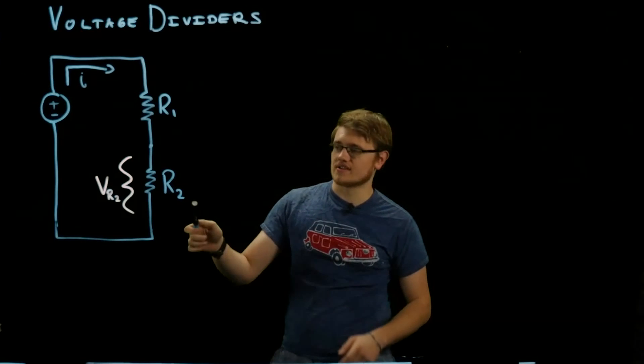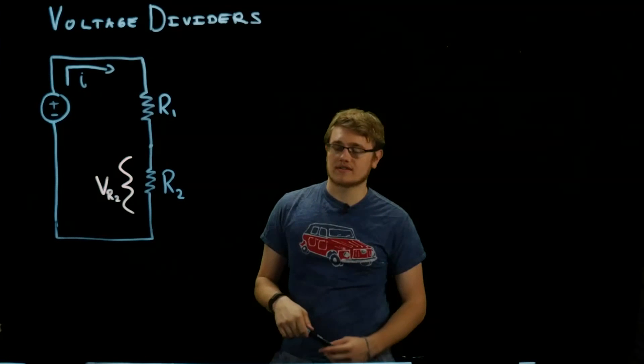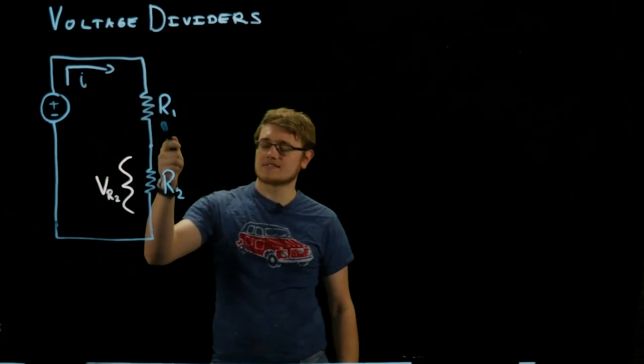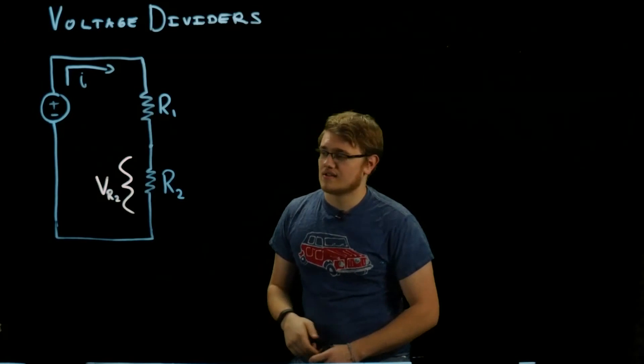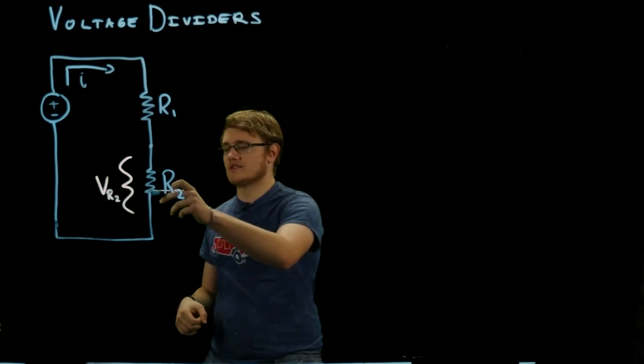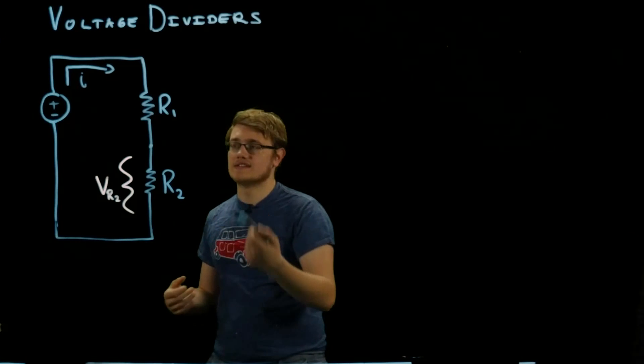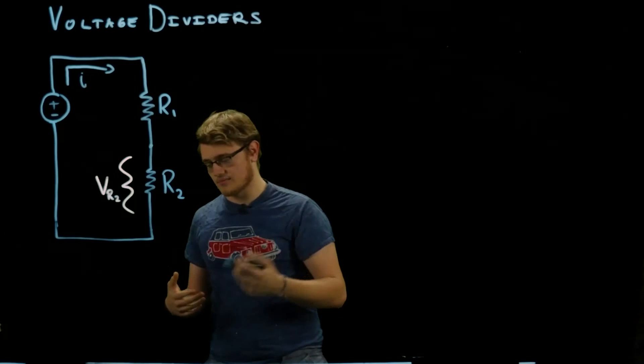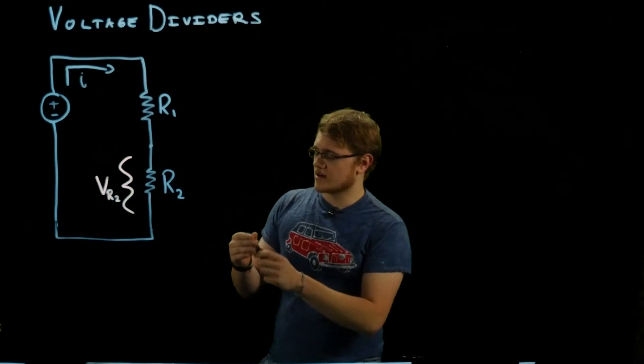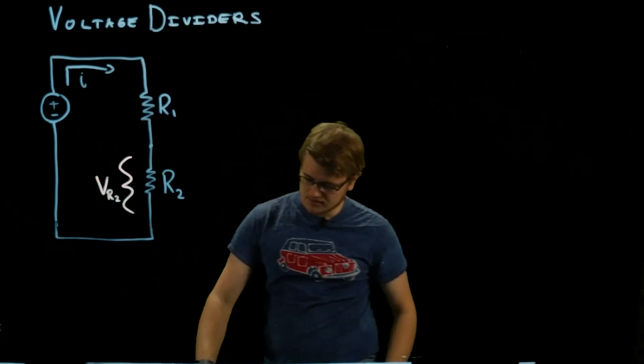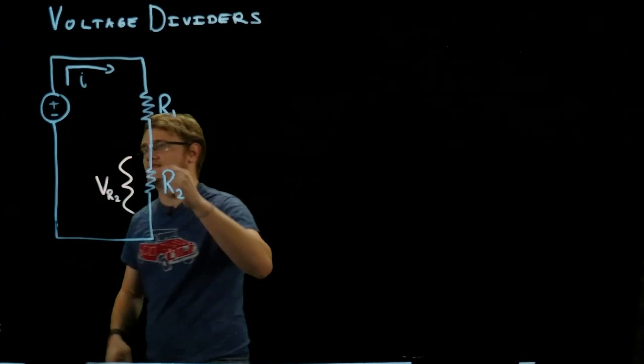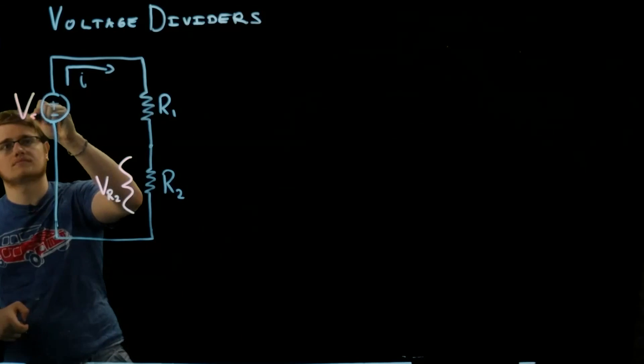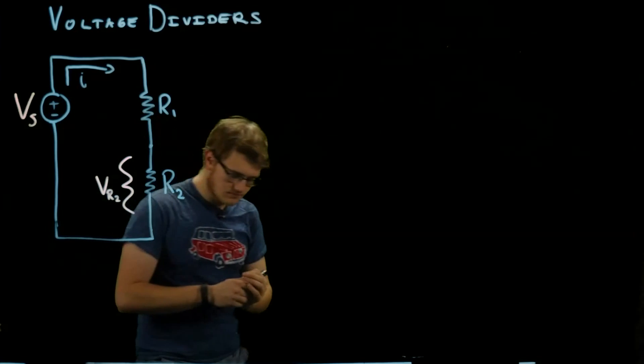Here's a circuit in which you would use a voltage divider. Right here we have two resistors in series. If we wanted to find the voltage across this resistor, we'd need a voltage divider formula. We're going to call this voltage over here Vs.